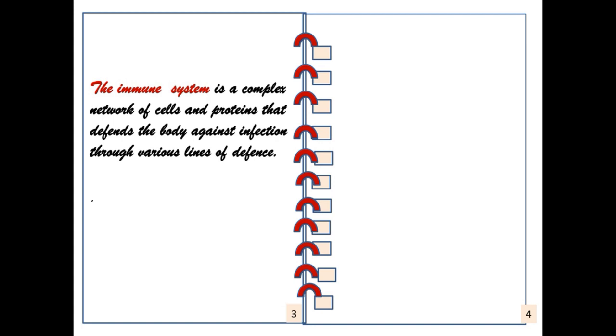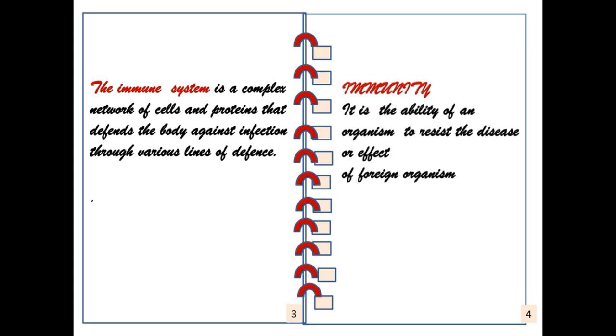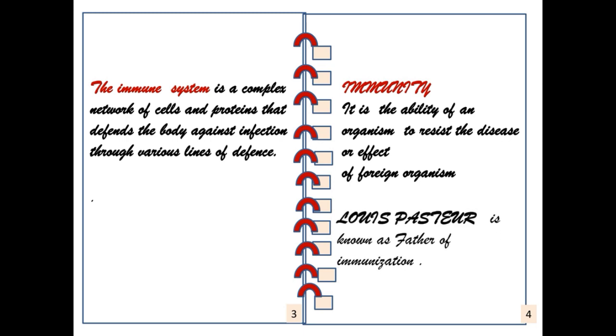It's a complex network of cells and proteins that defends the body against infection through various lines of defense. Immunity is the ability of an organism to resist disease or the effect of foreign organisms. Louis Pasteur is known as the father of immunization.